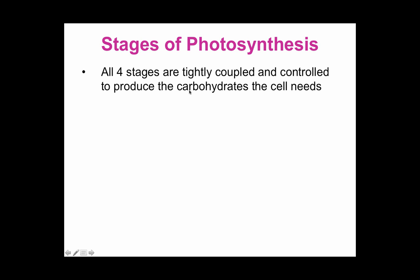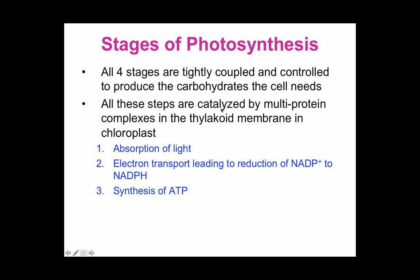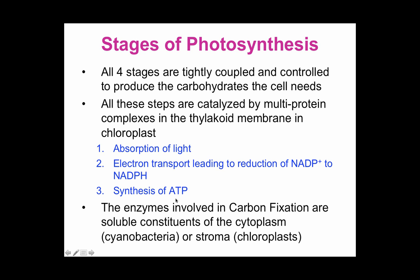All four stages are tightly coupled and controlled, producing the carbohydrates the cell needs — particularly glucose — and you can also produce fructose and therefore sucrose. All steps are catalyzed by multi-protein complexes, just like in respiration, but this is happening in the thylakoid membrane of the chloroplast, not in mitochondria. The absorption of light, electron transport producing NADPH and the proton motive force to generate ATP all happen in the thylakoid membranes. Carbon fixation happens in the stroma — the cytoplasmic region of the chloroplast — or in the cytoplasm of cyanobacteria.